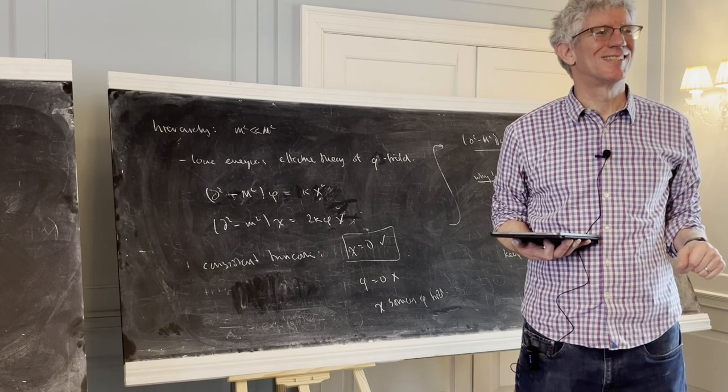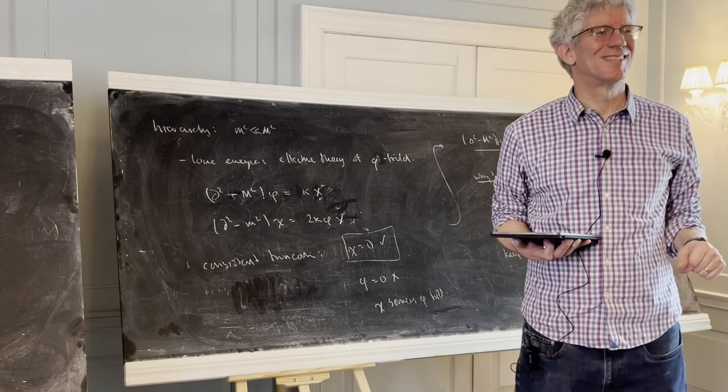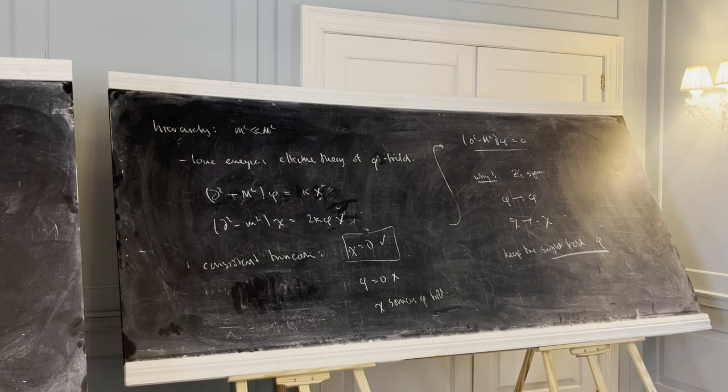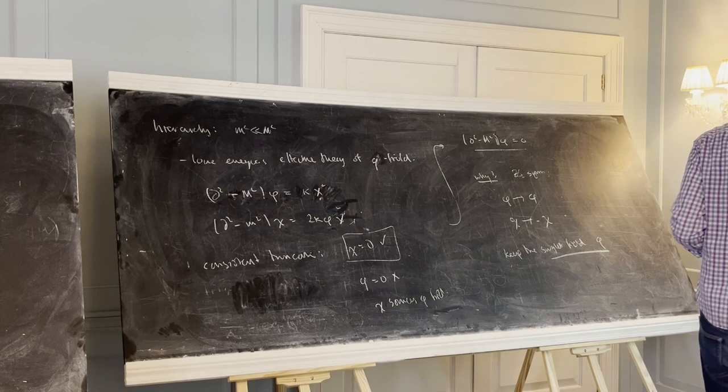What I'm interested in here is: what if you have a theory which doesn't have a hierarchy? Is there still some set of fields you can keep consistently? That's an interesting question because this is relevant to ADS-CFT — there seems to be no hierarchy between the ADS scale and the curvature scale of M.